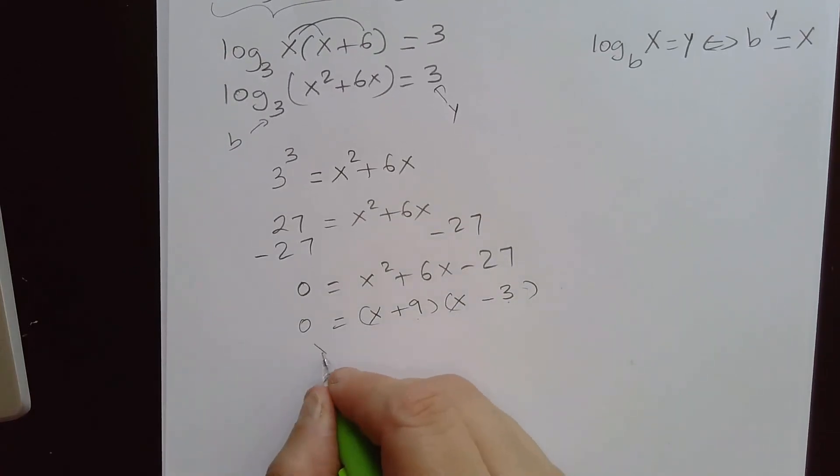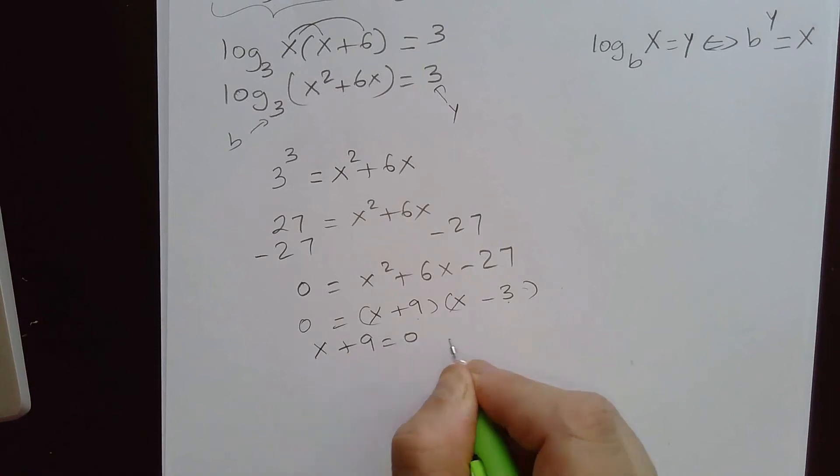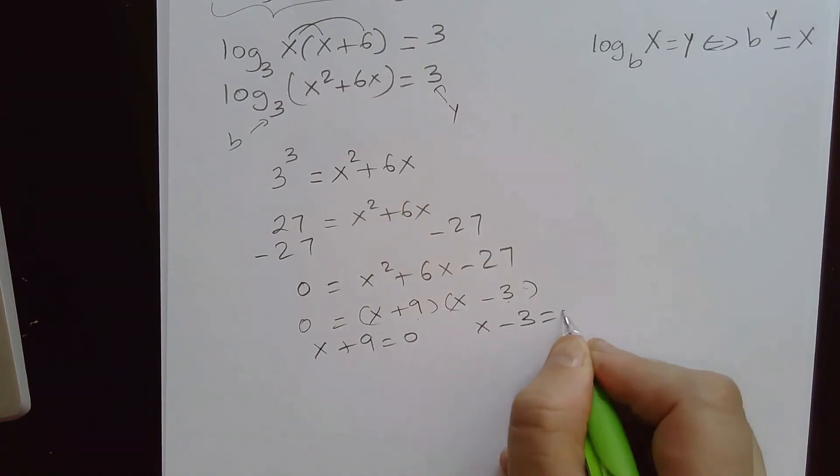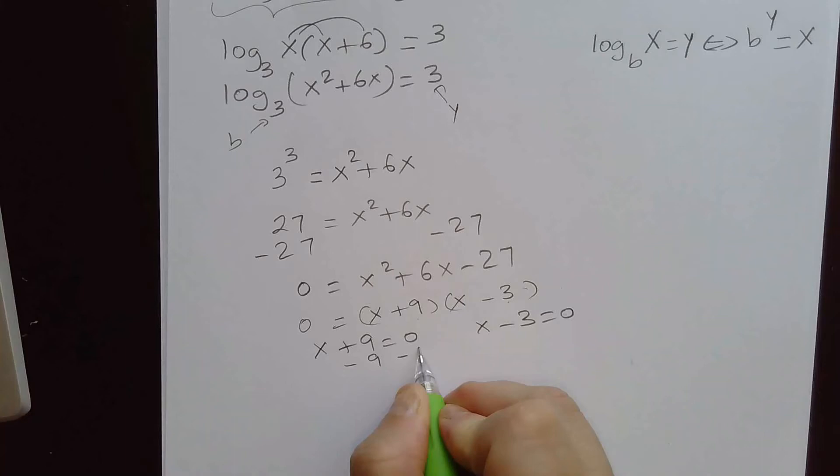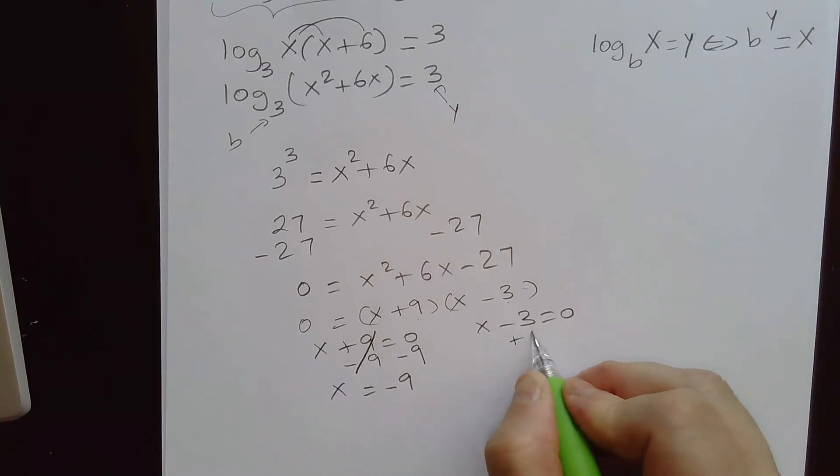Now setting each factor containing a variable equal to 0, we solve for the variable x. So x would be equal to negative 9, and here we add 3 on both sides, and x would equal to 3.